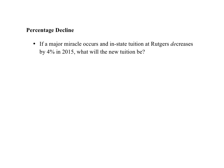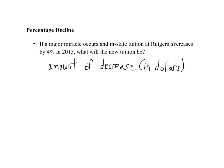Just as we've looked at percentage increases, we can also look at percentage decline, percentage decreases. Suppose that a major miracle occurs and in-state tuition decreases by 4% in 2015 — perhaps they discover a natural gas deposit under the meadowlands. So what will the new tuition be? The amount of the decrease in dollars will be exactly 4% of the 2014 tuition.